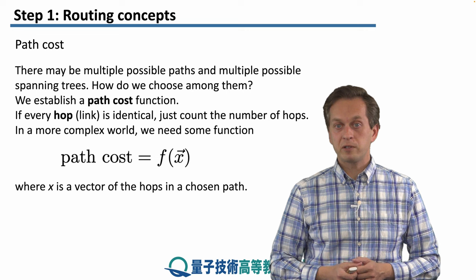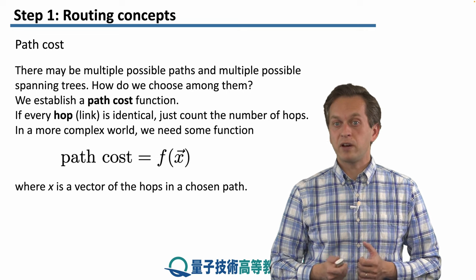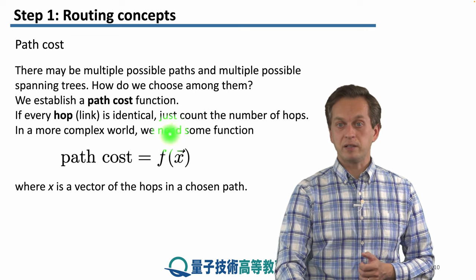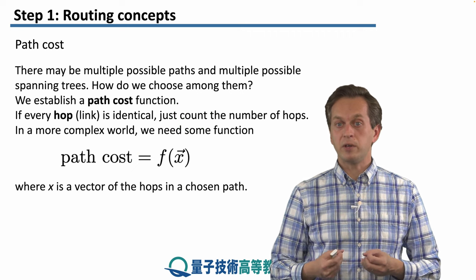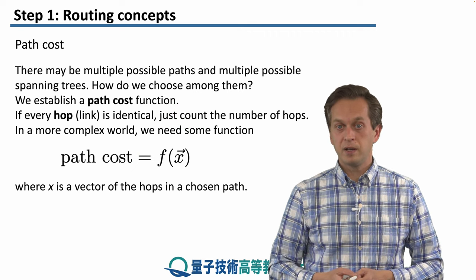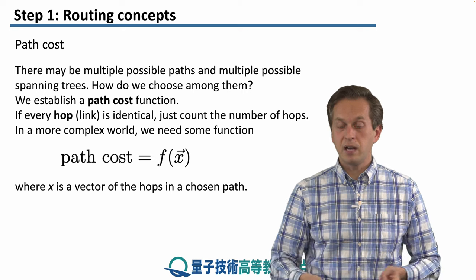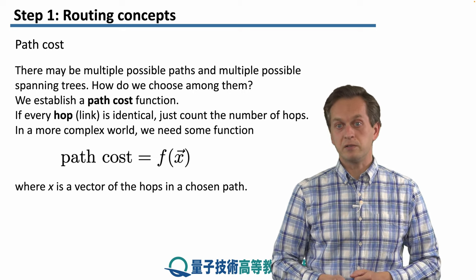But in a more complex world, we have some function, here represented by this f, and its argument is this vector x, which is a vector of all the hops in a chosen path. And for every path that we can find, a different cost will be associated with it.